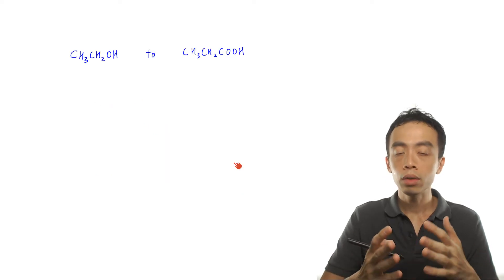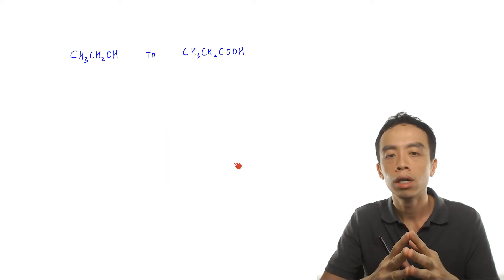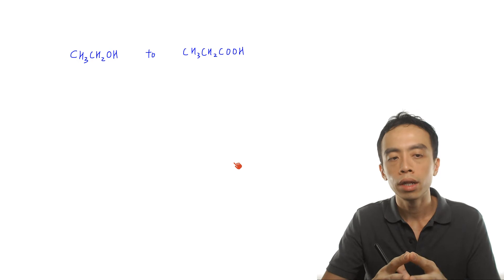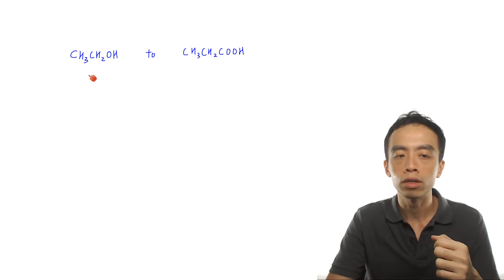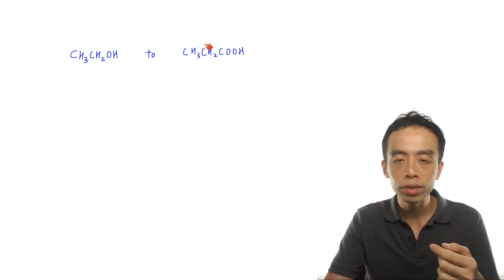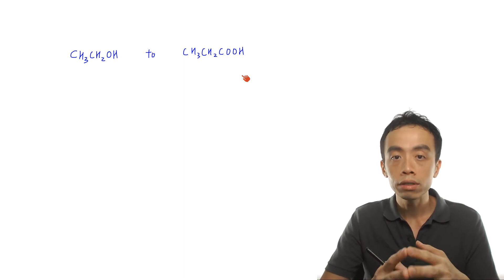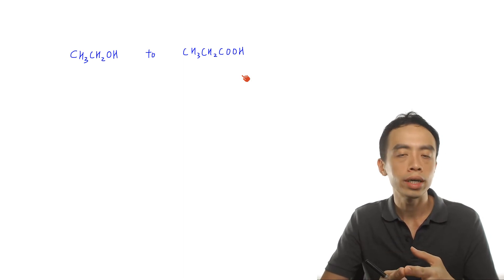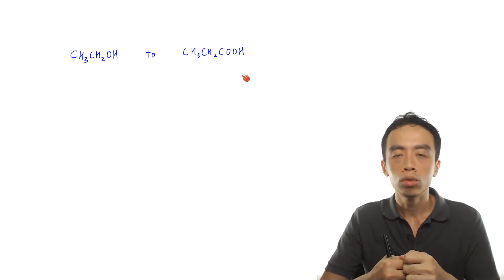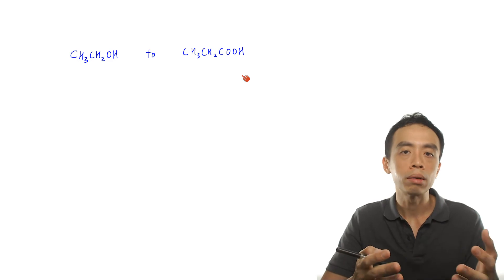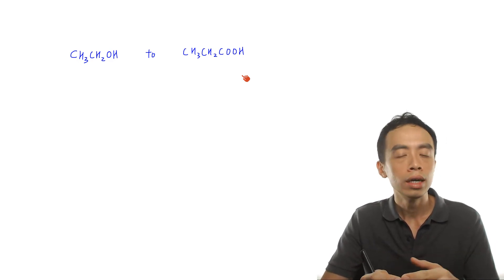So finally we can come back to our question. Again, what we have is I want to convert a 2-carbon alcohol to a 3-carbon acid. The first thing we should recognize is there is an increase in the number of carbon. So this is a step-up reaction — I have to go through a nitrile.